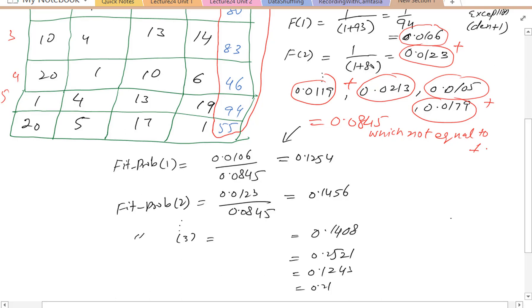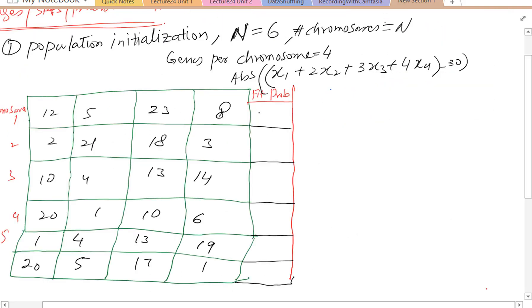Let's create some space and write the probability here. Now the probability sums to 1. Some chromosomes, as I said earlier, have higher probability than others and these are the fit individuals.